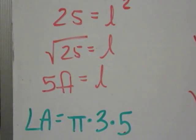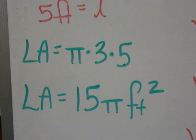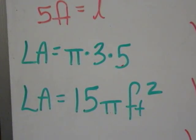And in simplest pi form, that's 15 pi feet squared. Remember the label is squared because it's an area.